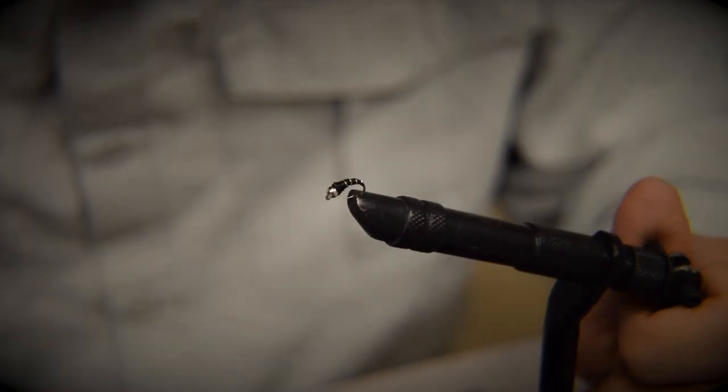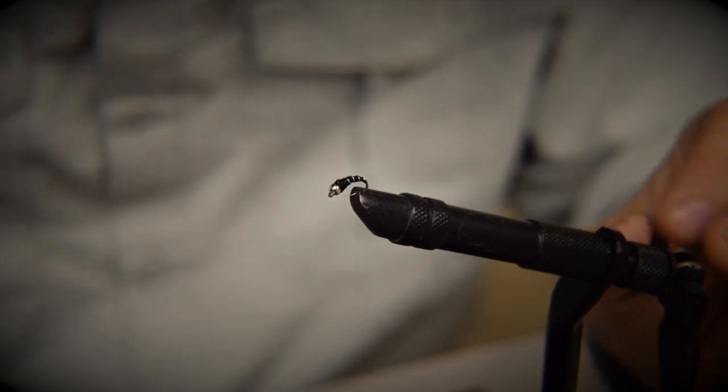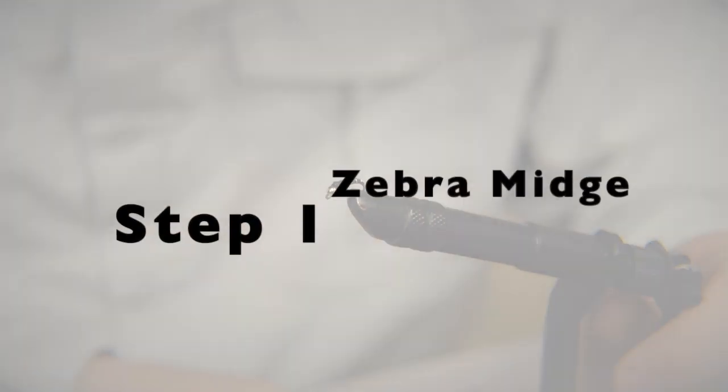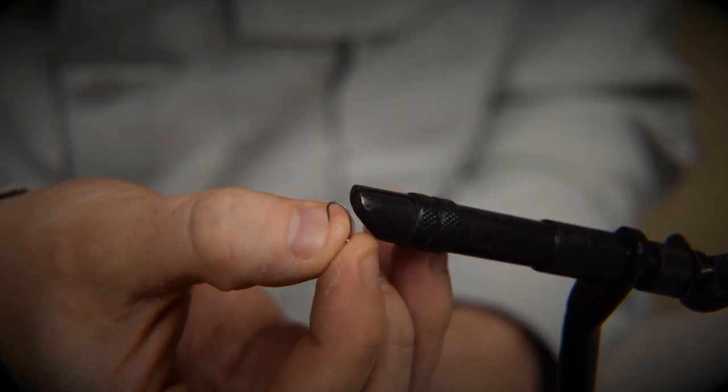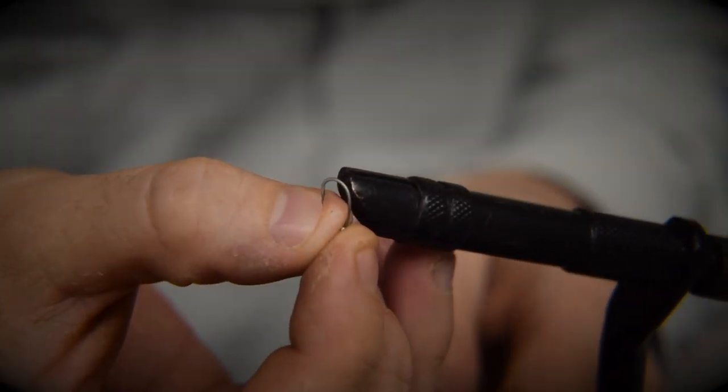All right CYO family, today we're going to be tying the zebra midge, the fly that you see right here. So, the first step that we're going to do today is we're going to take our size 16 curved hook, real small tiny little hook, and we're going to add a silver bead eye.